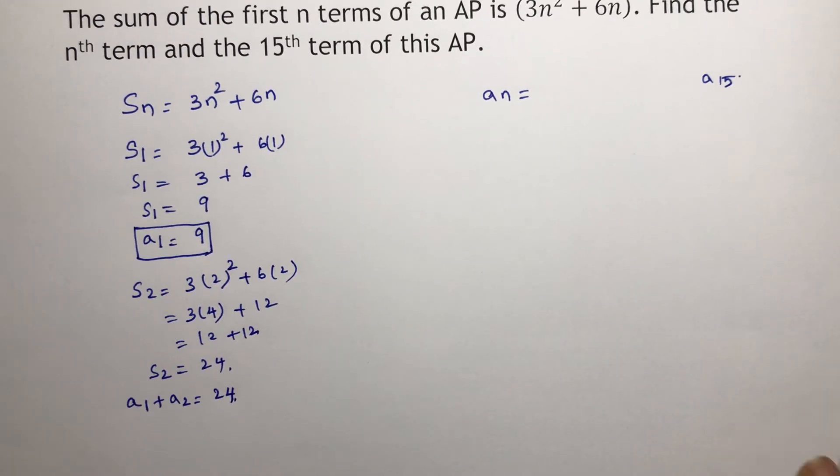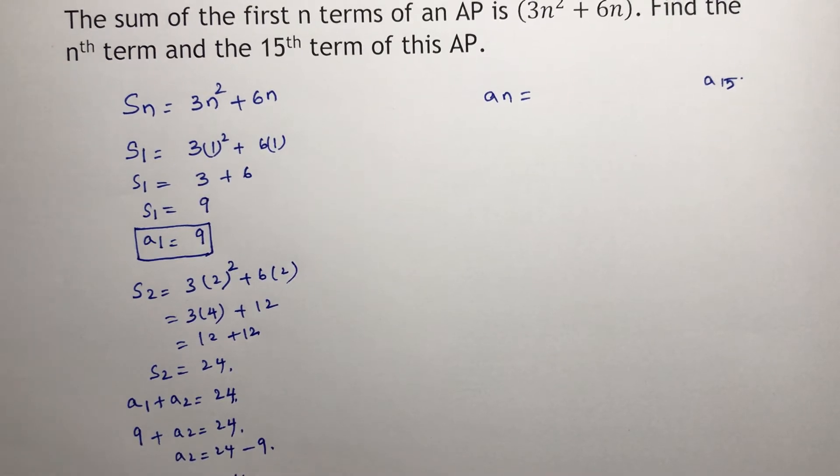A_1 plus A_2 is 24, but already you got the value of A_1. So 9 plus A_2 is 24. So A_2 will be 24 minus 9, which is 15.